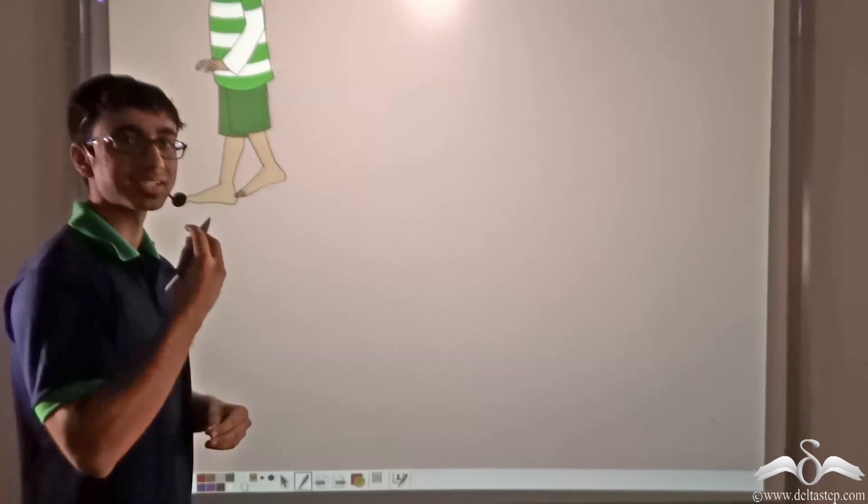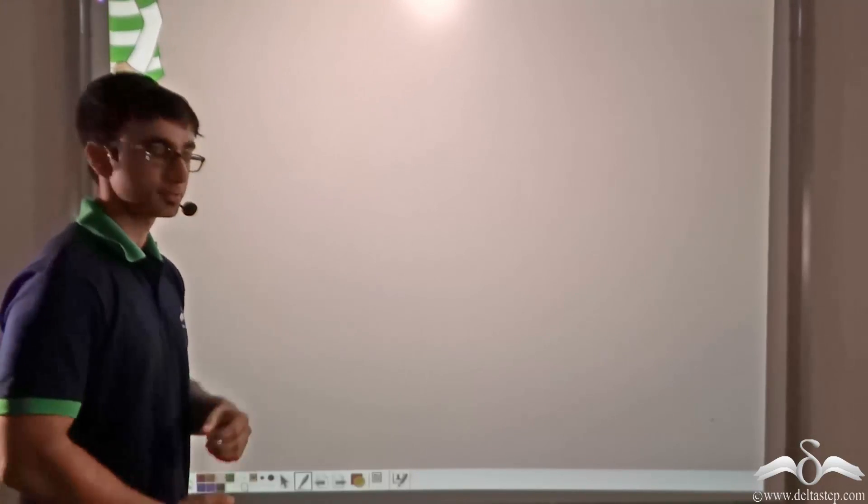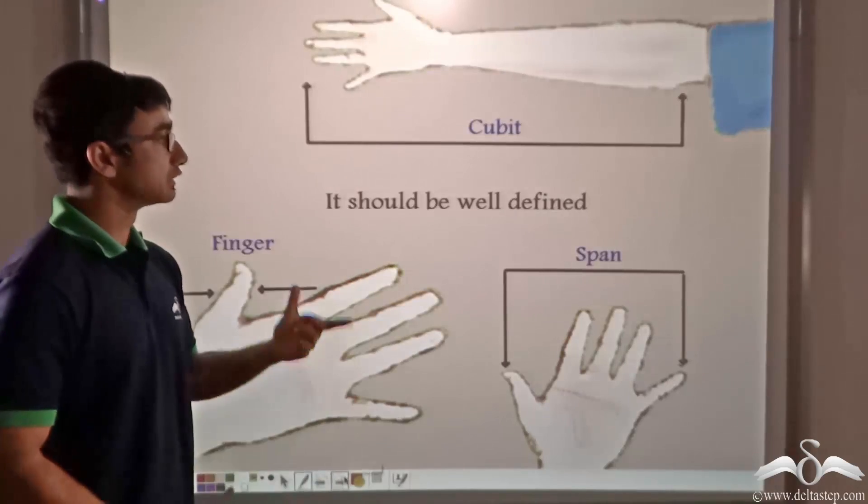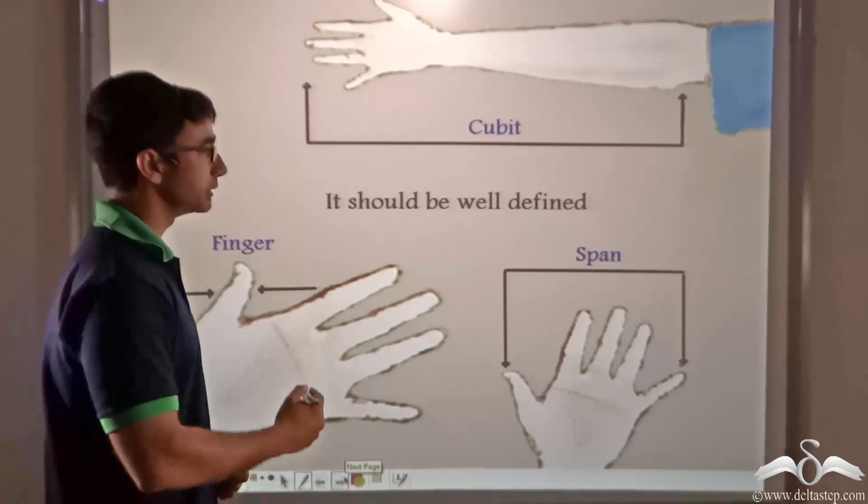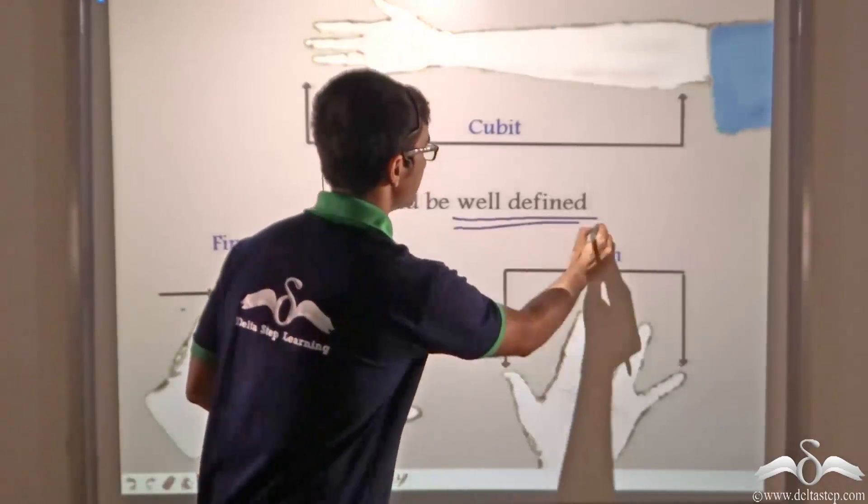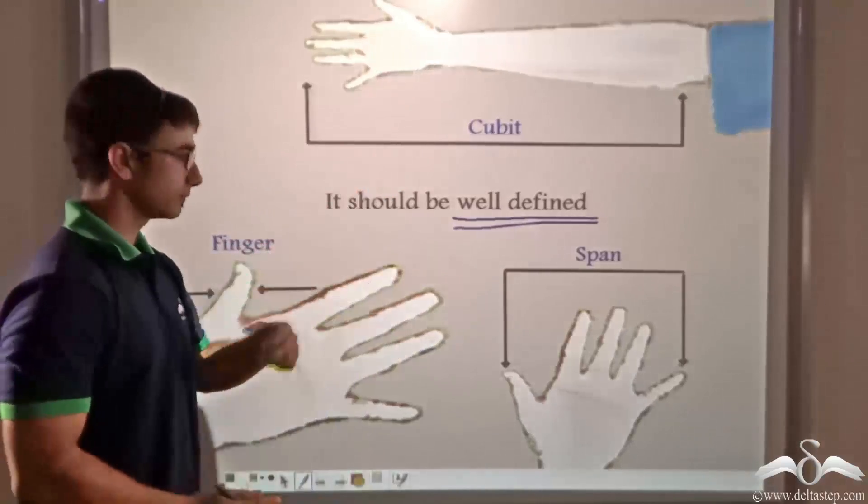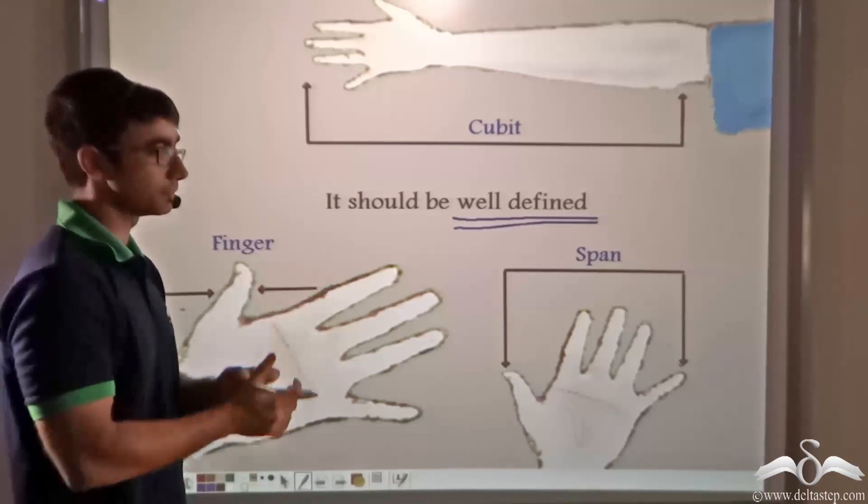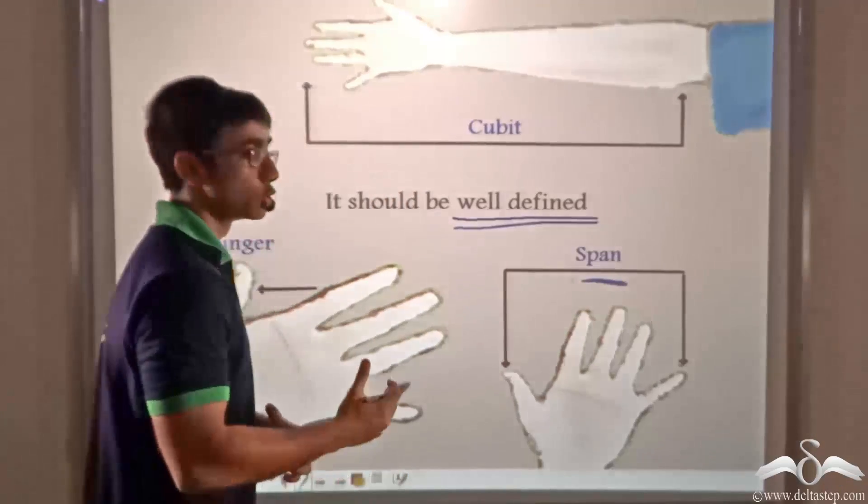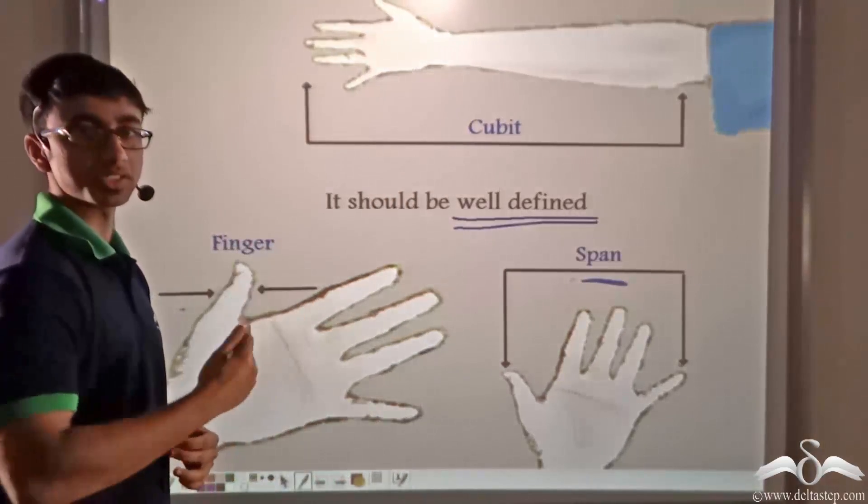So what is the basic criteria for a unit? The first criteria is that it should be well defined. Now if you consider a cubit or the width of a finger or even a handspan, you will find that it varies from person to person.